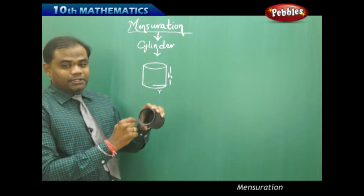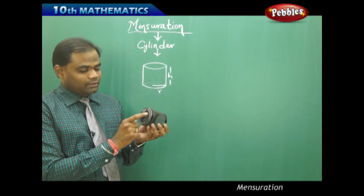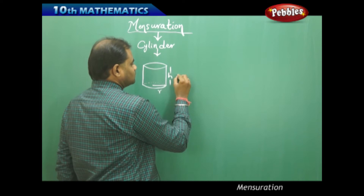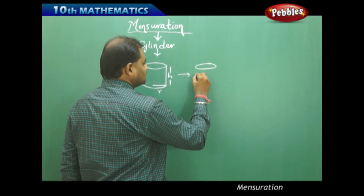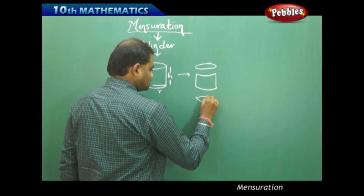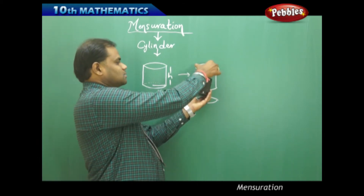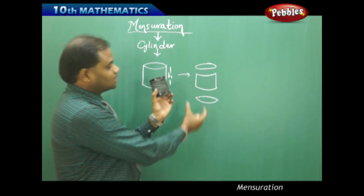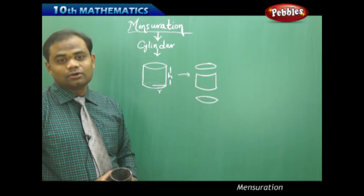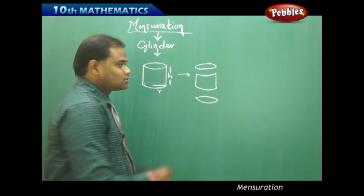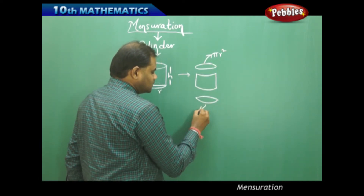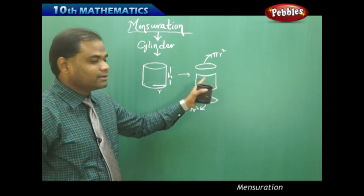When I have the upper region which is a circle and the lower region which is a circle, the area of each circle is πR². So when I divide the cylinder, the upper part comes out as a circle, the curved surface is in the middle, and the lower part is also a circle. These are the three basic structures of a cylinder: two circles and one curved part.